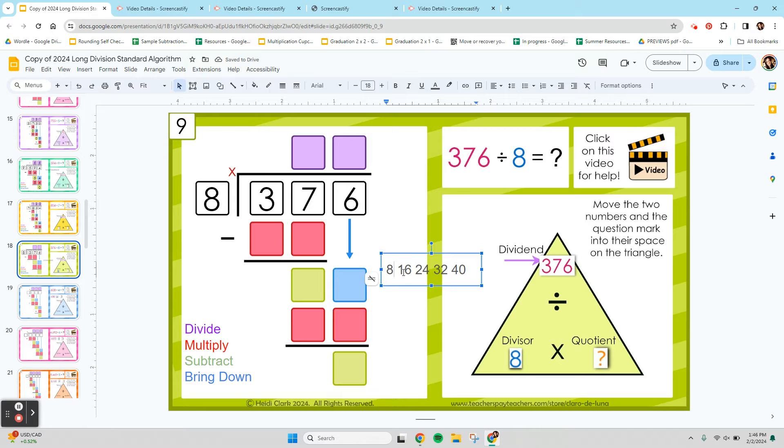So 1 8, 2 8s, 3 8s, 4 8s. That's as close as you can get. So 8 can go into 37 4 times.